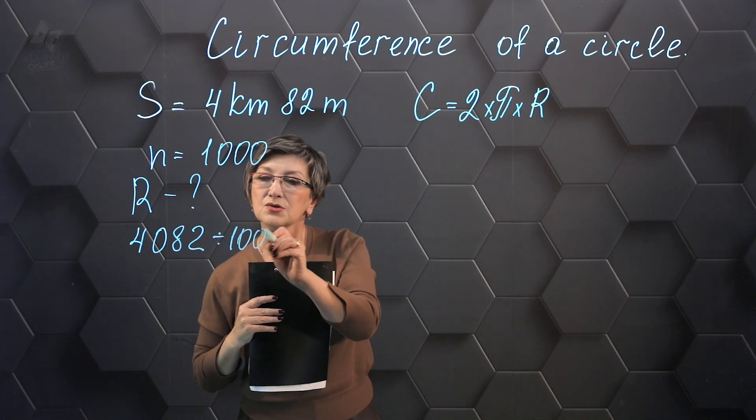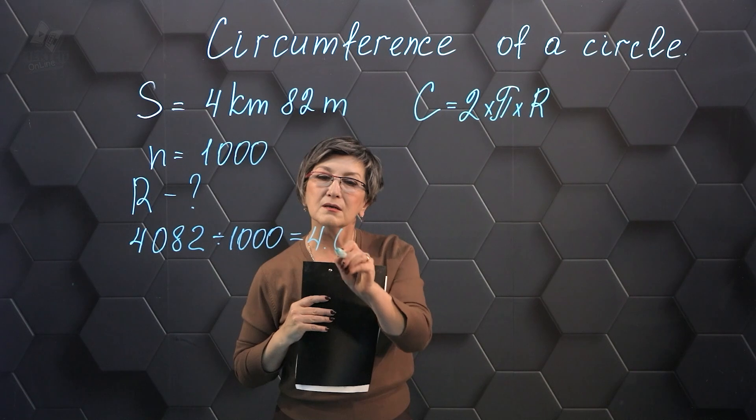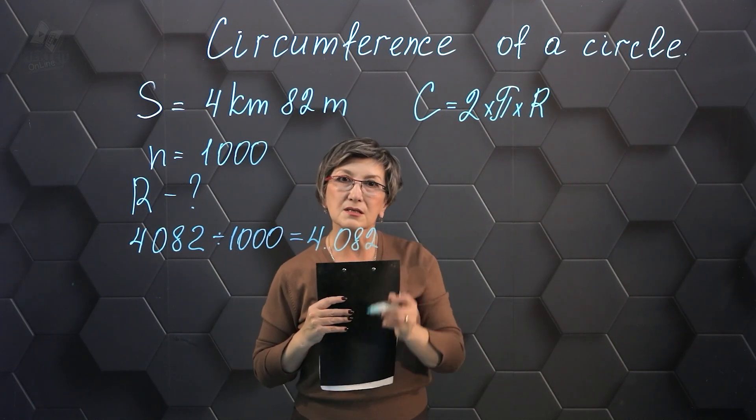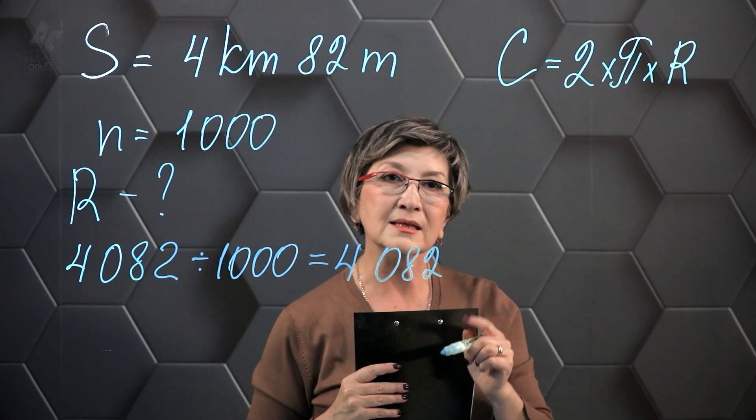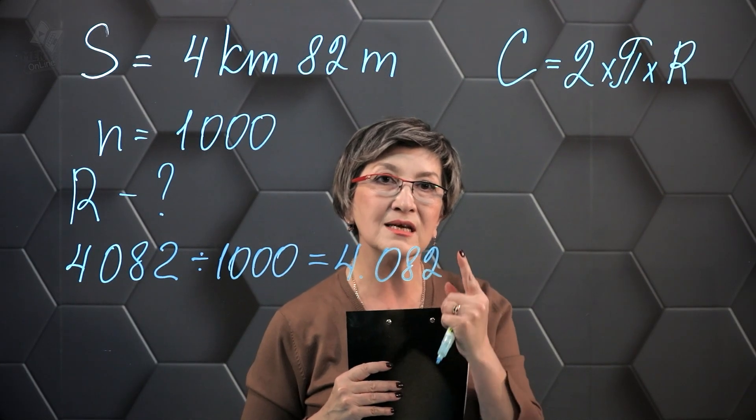Divided by 1000 equals 4.082. That's the length of the circumference. This is the distance the wheel traveled in one revolution.